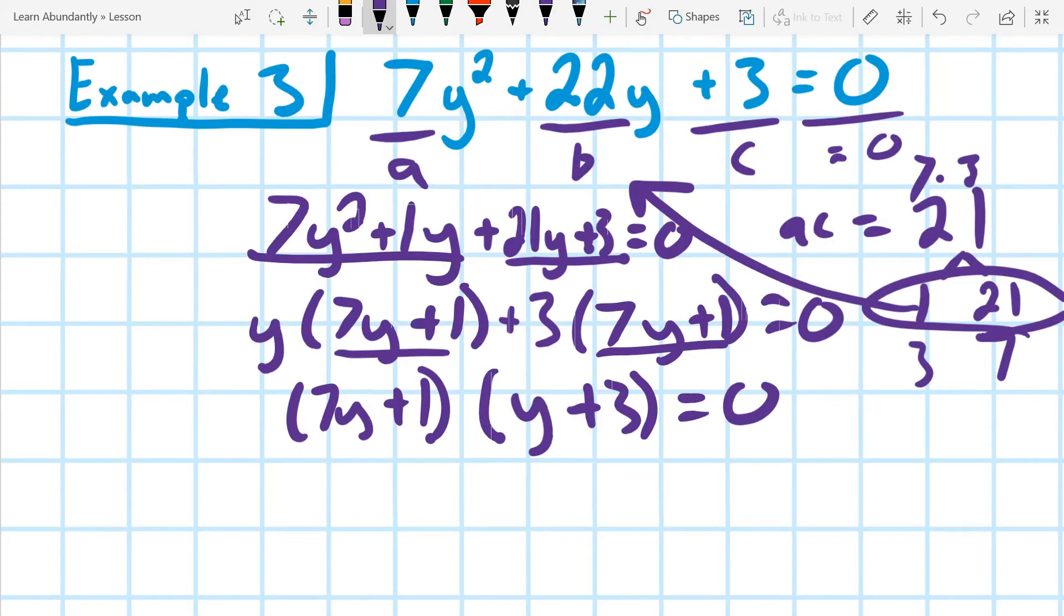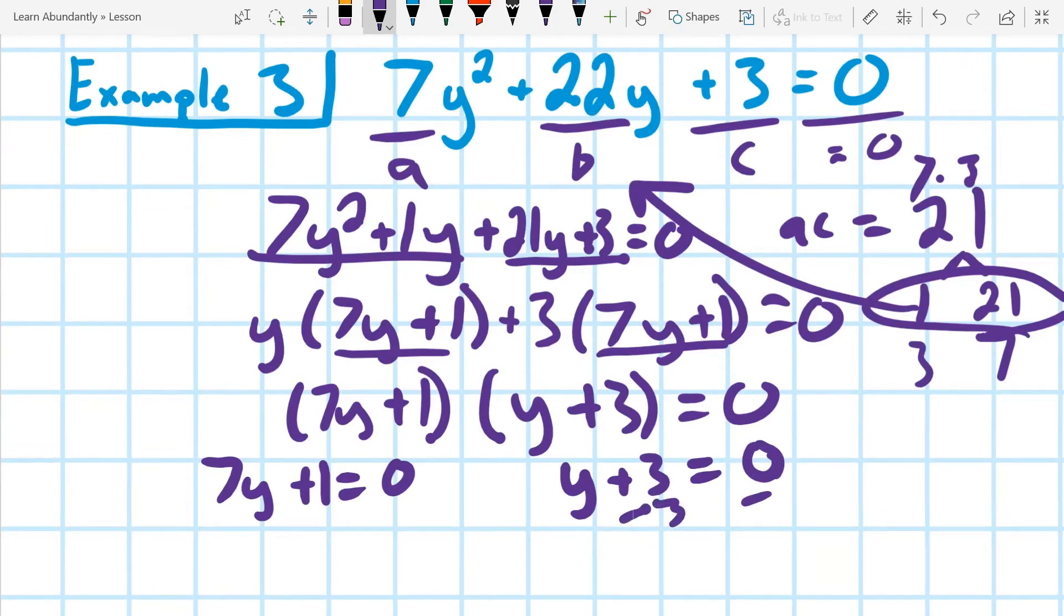Zero product property means I can split that up, and so I have 7y plus 1 equals zero, and y plus 3 equals zero. I can go ahead and solve these. I'm going to solve the y plus 3 first, and I subtract 3 from both sides, and I get y equals to negative 3. So that one's done.